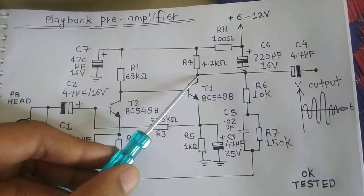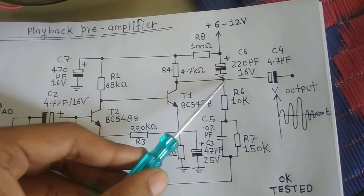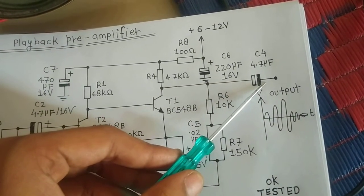We get the amplified output at the collector of this transistor and this output is given to an audio power amplifier.